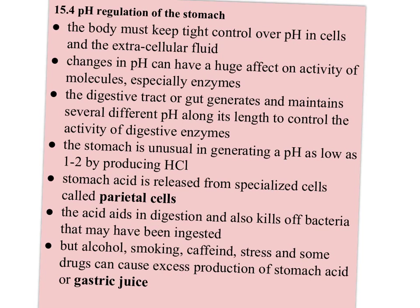The body must keep tight control over pH in cells and the extracellular fluid because changes in pH can have a huge effect on the activity of molecules, especially enzymes. The digestive tract, or gut, generates and maintains several different pHs along its length to control the activity of digestive enzymes. The stomach is unusual in that it can generate a pH as low as 1 to 2 by producing and releasing HCl. Stomach acid is released from specialized cells called parietal cells, and the acid aids in digestion and kills off bacteria that may have been ingested with your food.